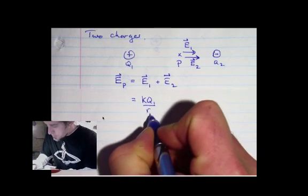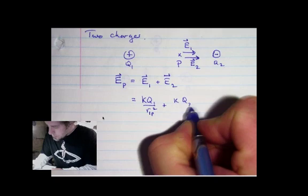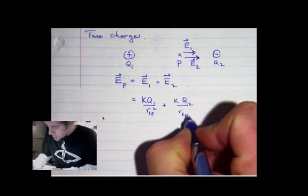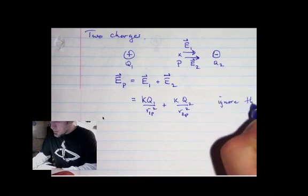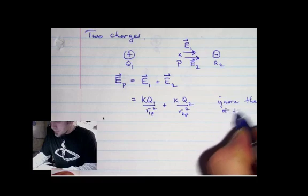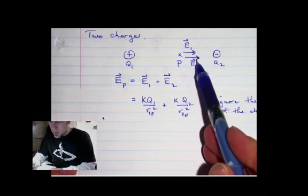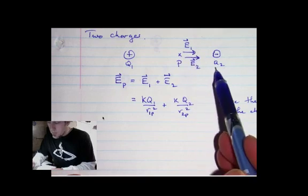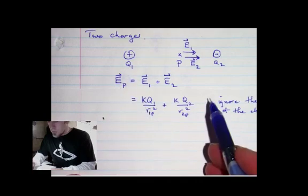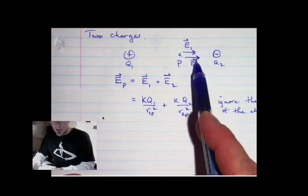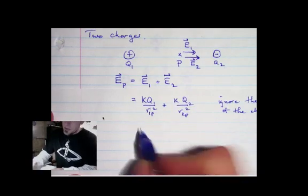The total field gives us kQ1 over the distance from charge one to P squared, plus kQ2 over the distance from charge two to P squared. When finding this sum, we ignore the signs of the charges, because we already know what direction the field is pointing — stated as towards Q2, to the right, or away from Q1. We simply sum the magnitudes and state the direction.